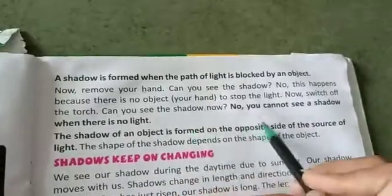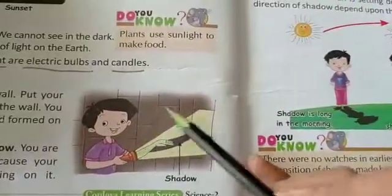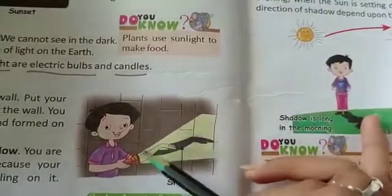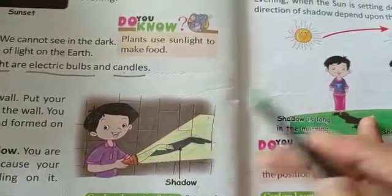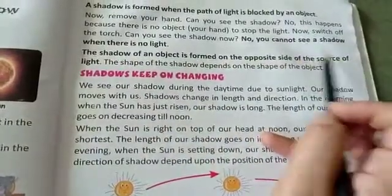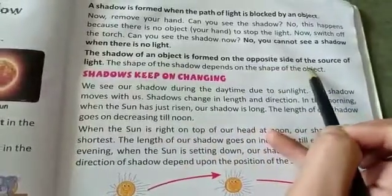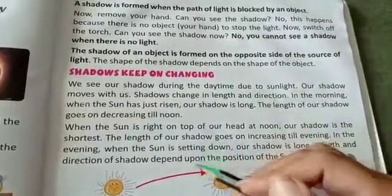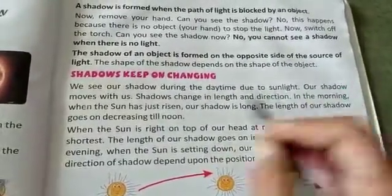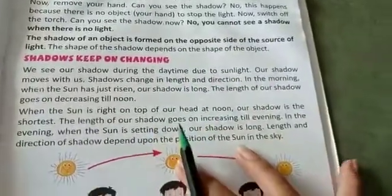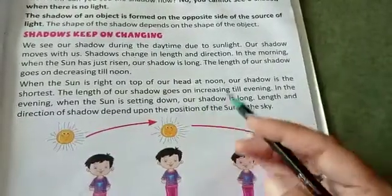The shadow of an object is formed on the opposite side of the source of light. The shape of the shadow depends on the shape of the object. We see our shadow during the daytime due to sunlight. Our shadow moves with us — as we move, our shadow also moves. Shadow changes in length and direction.